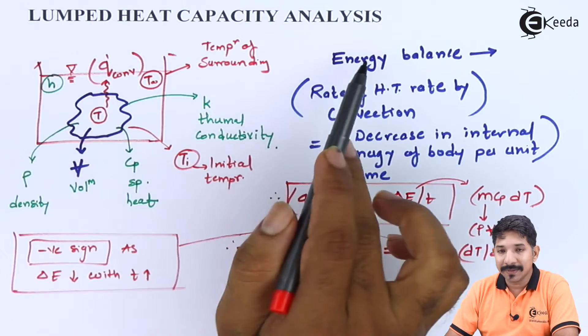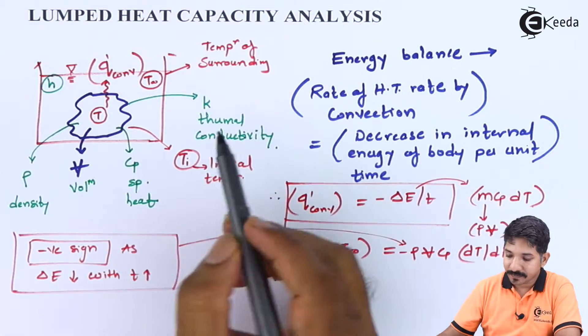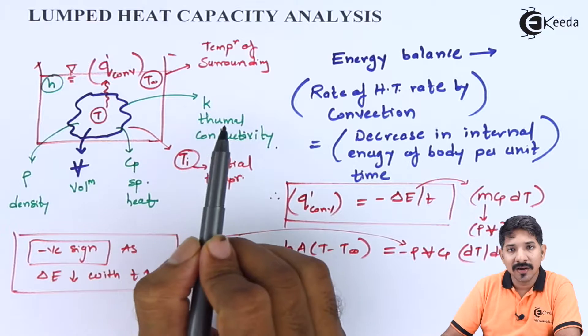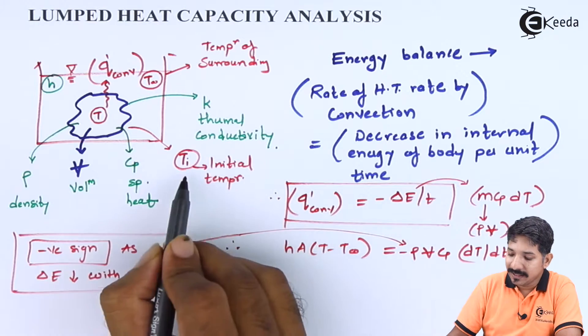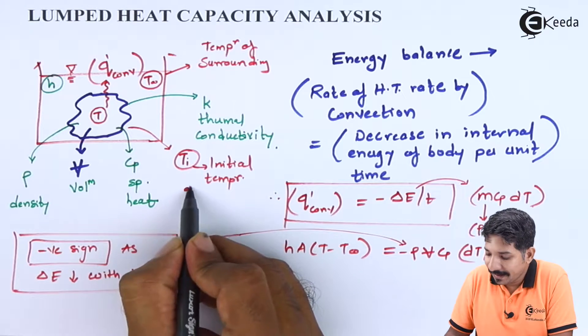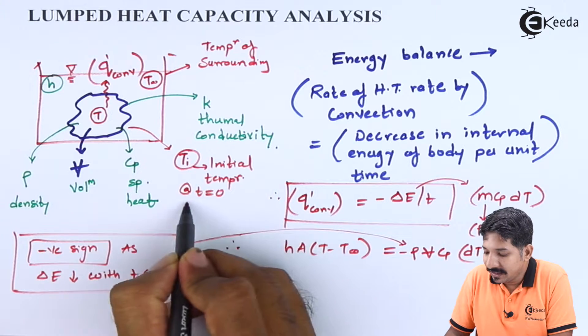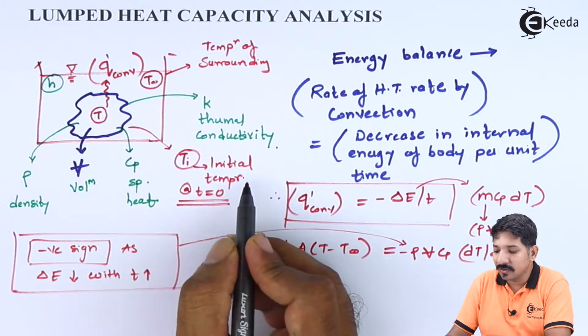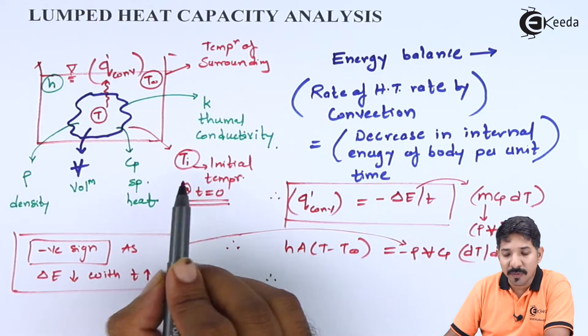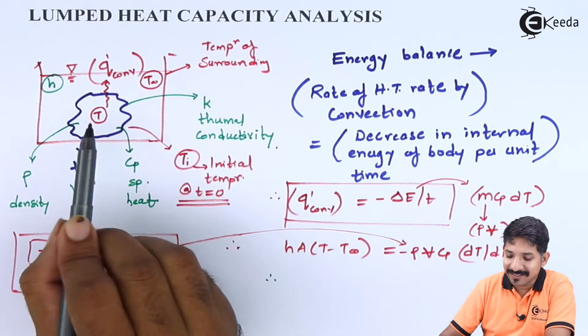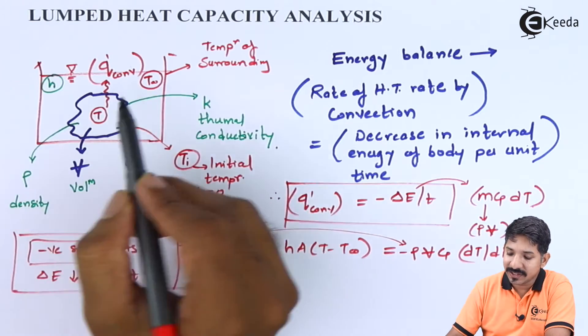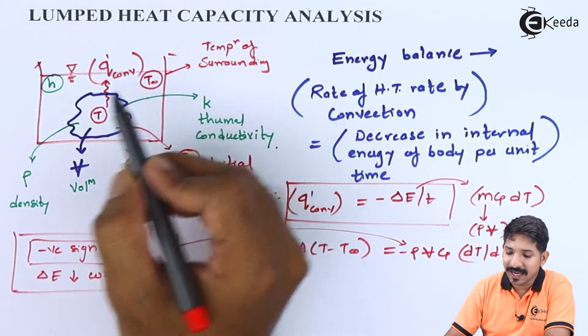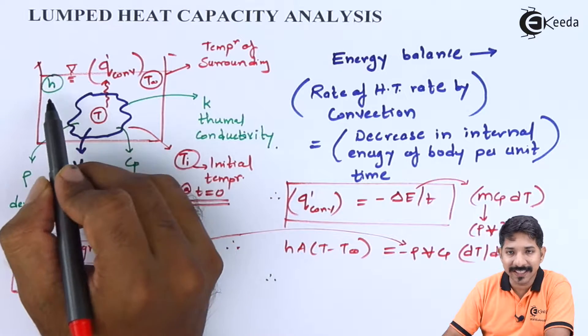In the lumped heat capacity analysis, again consider a small body. Let us say the body is kept at Ti initially, so at T equal to 0, when time was 0, the temperature of the body was Ti. Now this body is kept under a surrounding where the surrounding temperature is T infinity and the heat transfer coefficient of the surrounding is H.